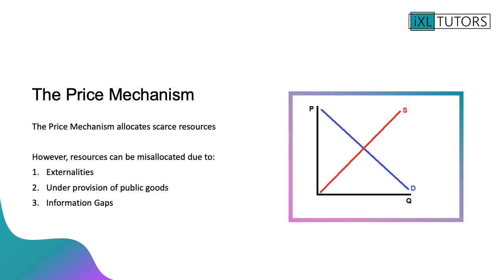The price mechanism is one of the things we're going to look at. We expect the price mechanism to allocate scarce resources. However, market failure occurs when resources are misallocated due to three things: the existence of externalities, the under-provision of public goods, and information gaps.